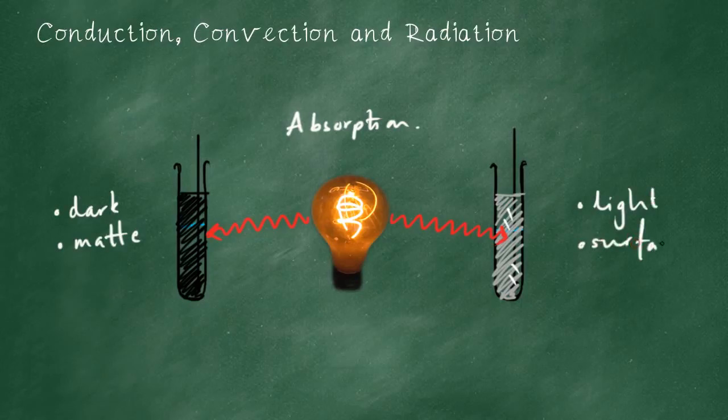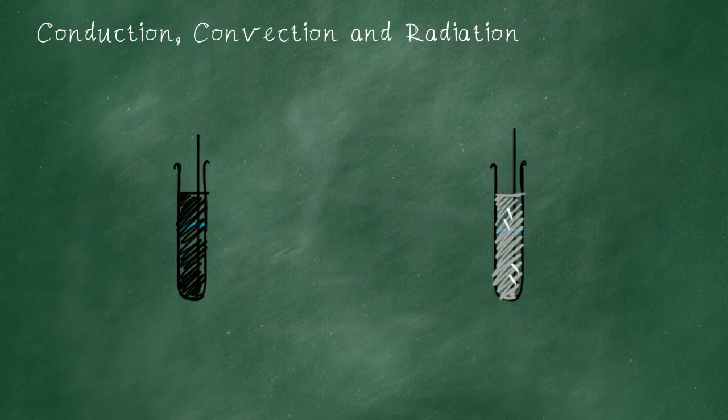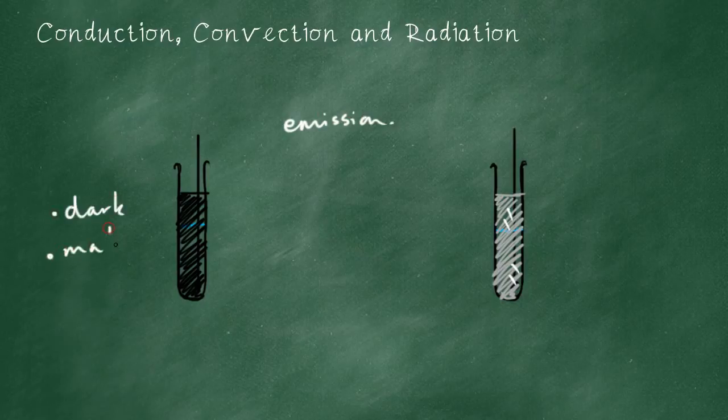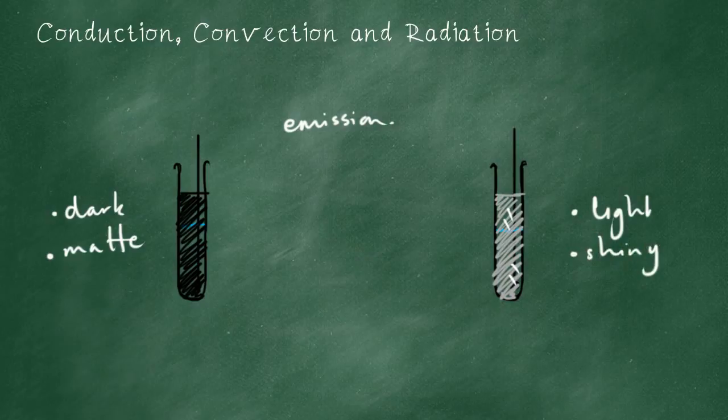You can say that the heat reflects from this light and shiny surface, but do not say bounce. And do not say attracts when you mean absorb. You must use those specific keywords. Let's say we've heated them both up to the same temperature. Which one will emit more? Which one will do most emission? Is it the dark matte one or the light and shiny one? Actually, it's the same. The dark matte one emits more infrared than the light and shiny one.